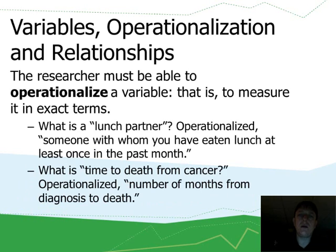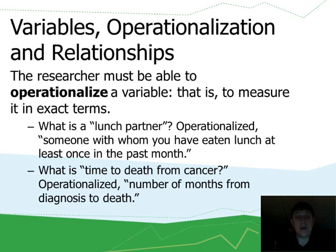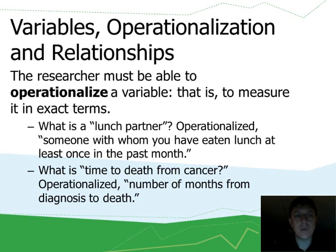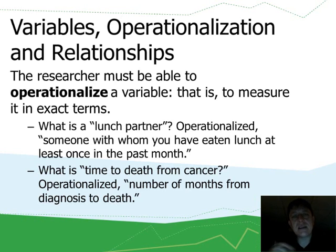When we study variables, it's important to operationalize them. To operationalize is a fancy word that simply means you have to measure your variable in exact terms. So when I say 'time to death from cancer,' I should be more specific. To operationalize it is to make it so that anybody can make the same measurement and be sure those measurements are comparable. If instead I say 'number of months from diagnosis to death,' that's a particular unit — a number of months — and it sets a standard for how I'm going to count the months.